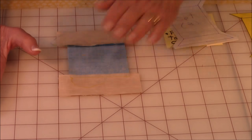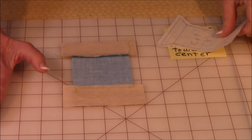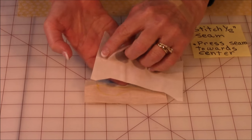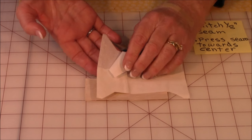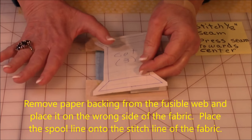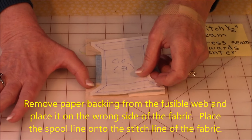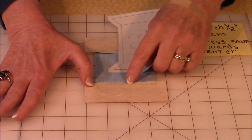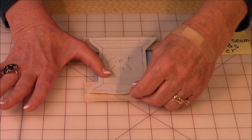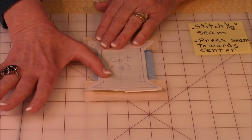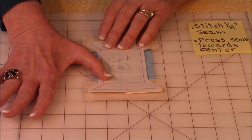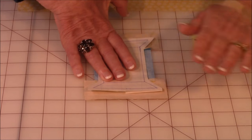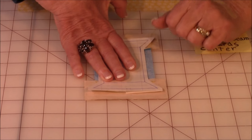Then on the wrong side here, take your fusible webbing piece. Remove the paper backing. So now you have that sticky side there. Place that sticky side down on the back of your fabric. Lining up this line with the stitch line. Place it on both ends on the stitch line. Now if it doesn't line up absolutely perfect, don't worry because when you do your applique stitches, it's going to cover up any imperfections you may have. So finger press it down.